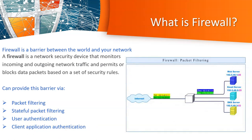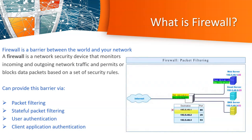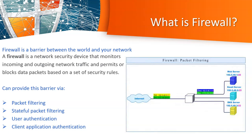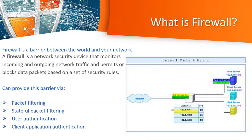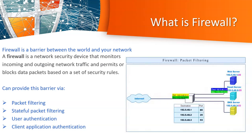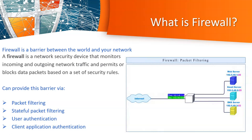There are also firewalls with client application authentication. For example, a firewall can check which programs, software, or applications are allowed to run. It can block the use of browsers, Skype software, or games. So there are firewalls that can check which applications are allowed and disallowed.